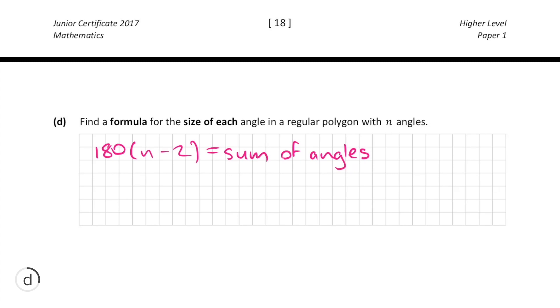And in part c we worked out that to find the size of each angle in the polygon we divide the sum by the number of angles or n.